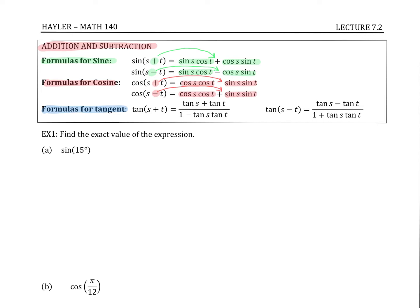Then the formulas for tangent — again, there is addition and subtraction for both. The tangent formulas are a lot more complicated. For the addition version, we get addition on the top and subtraction on the bottom. For subtraction, we have subtraction on the top and addition on the bottom. Inside, there is an addition or subtraction of two different values for sine, cosine, and tangent, and they split respectively in different ways.